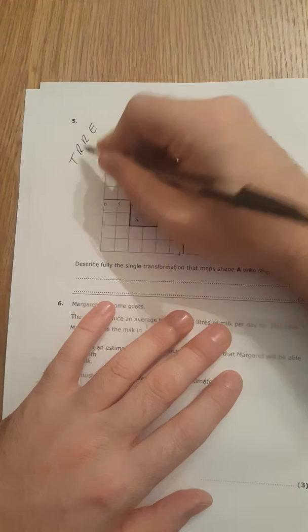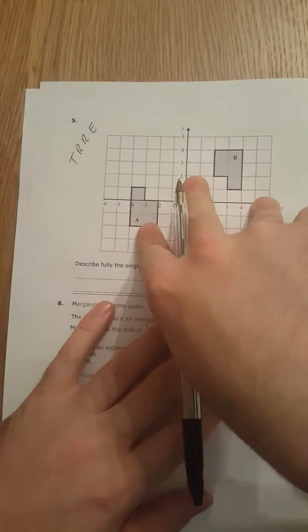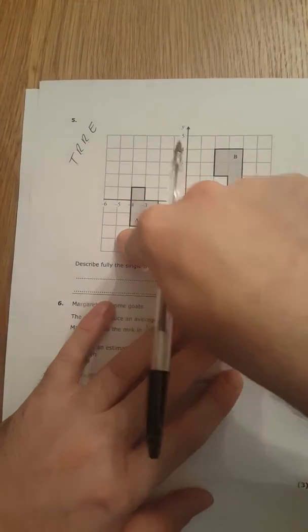There's translation, reflection, rotation, or enlargement. So just look at what you've got. This shape is upside down, therefore it's been rotated.